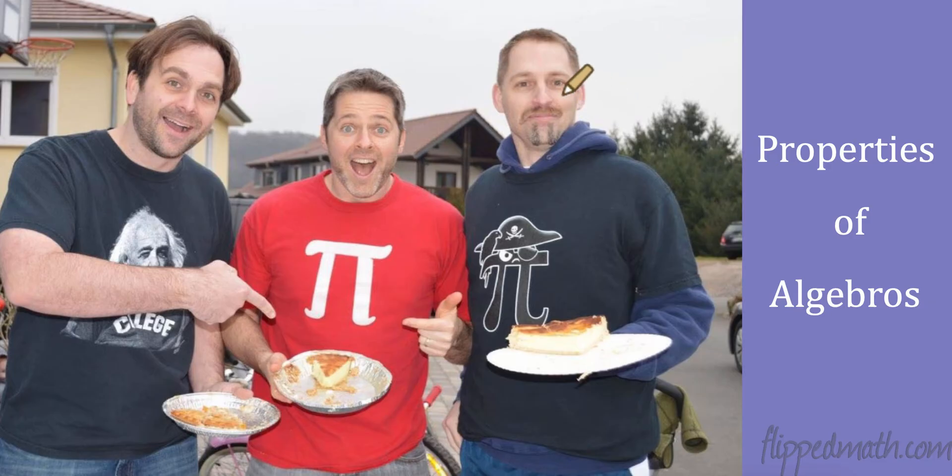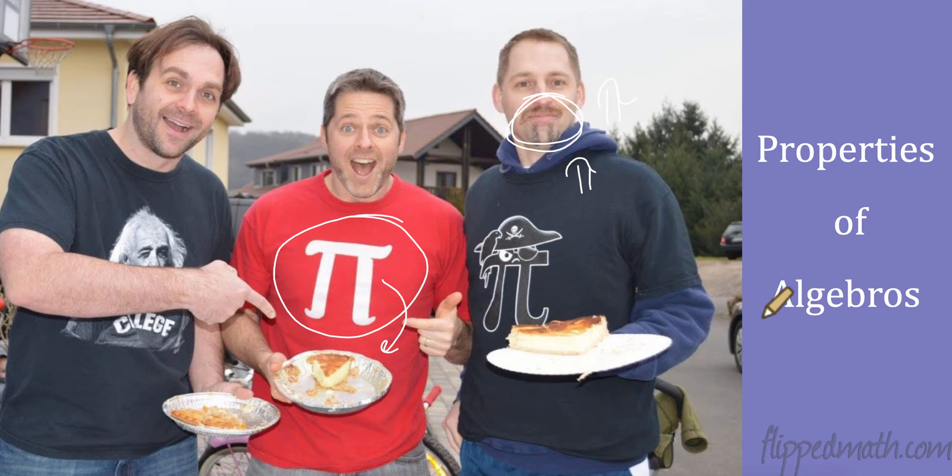Some of the properties we'd like to talk about are weird goatees. Who would shave their goatee into a pie symbol? Nobody but Mr. Bean, right? Awkward t-shirts, pie, and they are eating pie. Only these three guys would get together and celebrate pie day by eating pie together. That's the first property of being an algebra - be dorky, which is awesome. Way to go, guys.